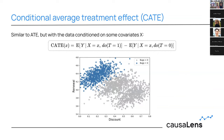The Conditional Average Treatment Effect, or CATE, is similar to the ATE but conditioned on some covariate X. The equation is the same but with an additional conditioning variable X. For example, I might look only at users who faced zero bugs — the blue data points — and compute the treatment effect for just that subgroup.